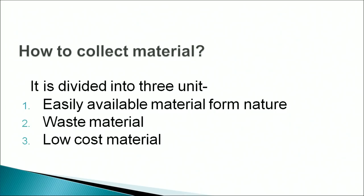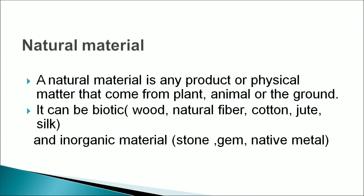How to collect these materials? The collection of material includes three units. The first one is easily available material from nature, the second one is waste material, and the third one is low cost material. A natural material is any product or physical matter that comes from plants, animals, or the ground.